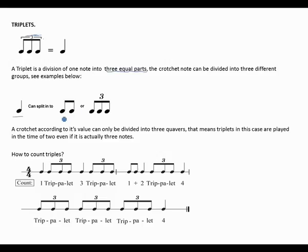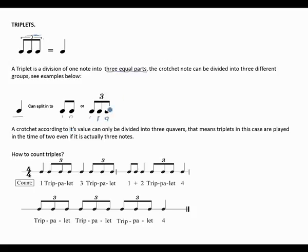The crotchet note can be divided into groups. Dividing into two groups gives two quavers — counted as 'one and.' Dividing into three groups makes a triplet — counted as 'one e n' or 'one and uh.' A crotchet according to its value can be divided into three quavers, meaning triplets are played in the time of two, even though there are actually three notes.